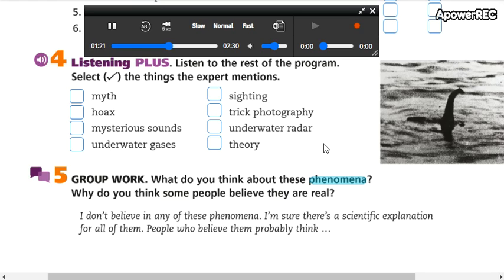They release natural gases as the sun beats down on the river. Underwater gases. Got it. Right. Then, at night, these gases come to the surface of the river and rise into the air. Fascinating.